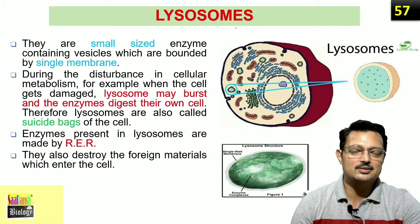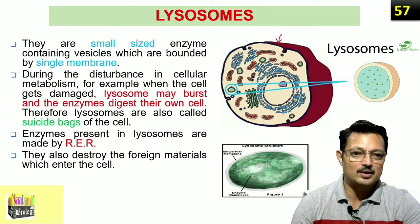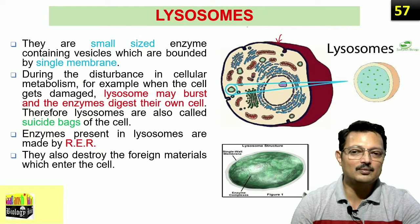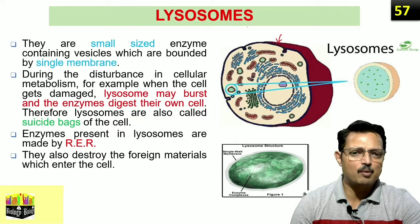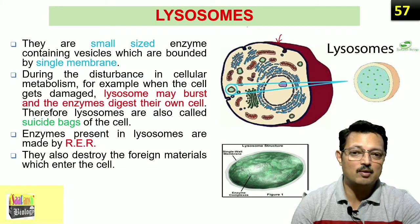The next organelle of the GERL system is lysosomes. Lysosomes are small-sized vesicles containing a lot of hydrolytic enzymes. Whenever a cell is damaged or destroyed, these lysosomes burst open and their contents digest the cell itself — hence they are called the suicidal bag. They are formed by the Golgi body, while the enzymes are formed by the RER. They are very important in the cellular defense mechanism and destroy foreign material which enters the cell.